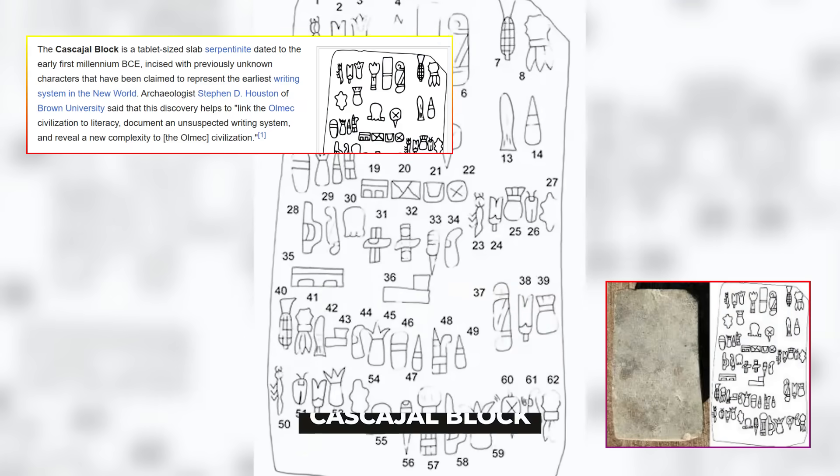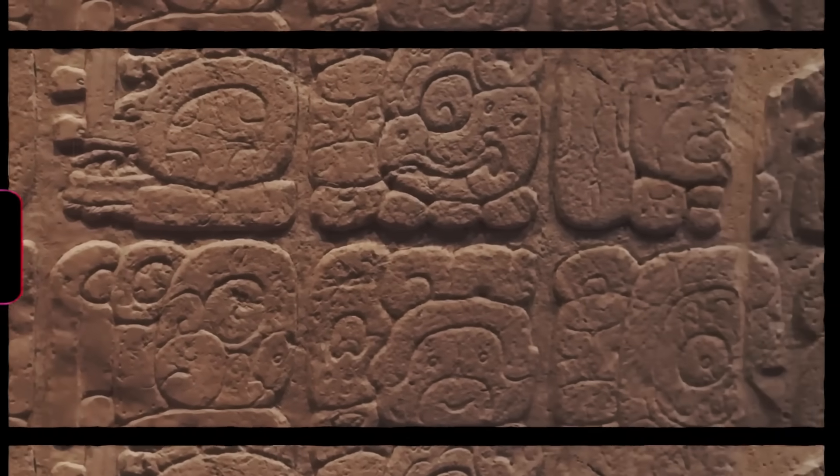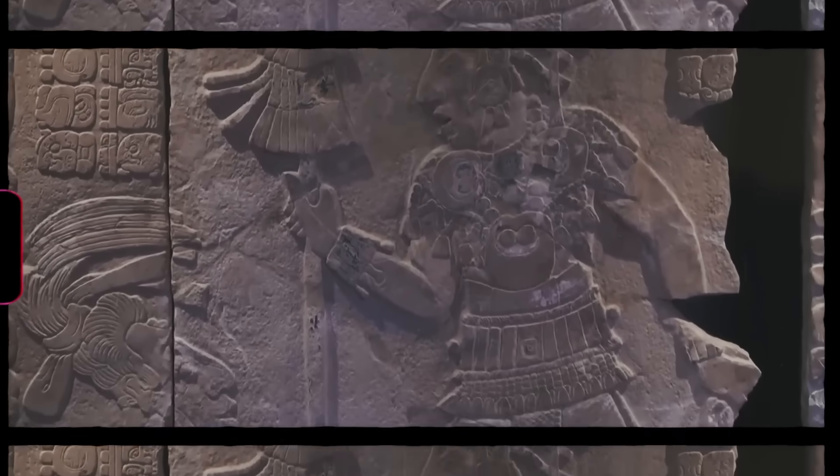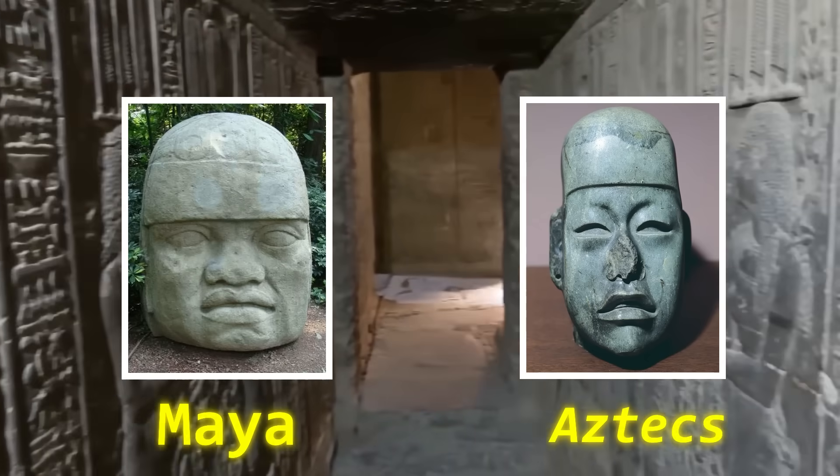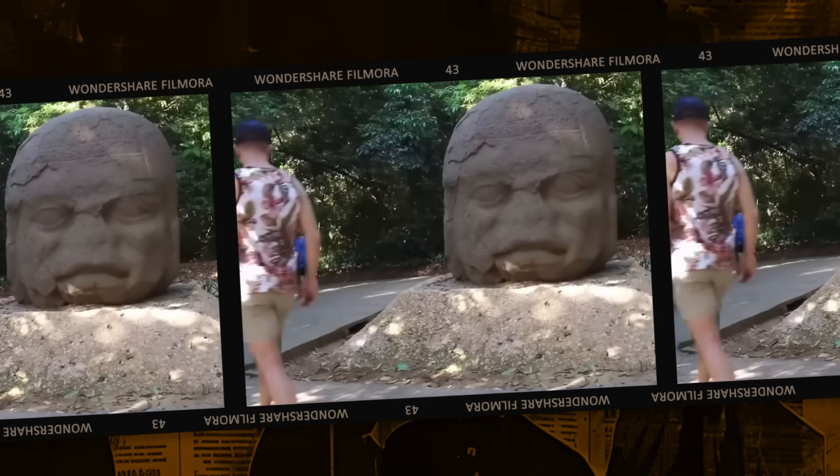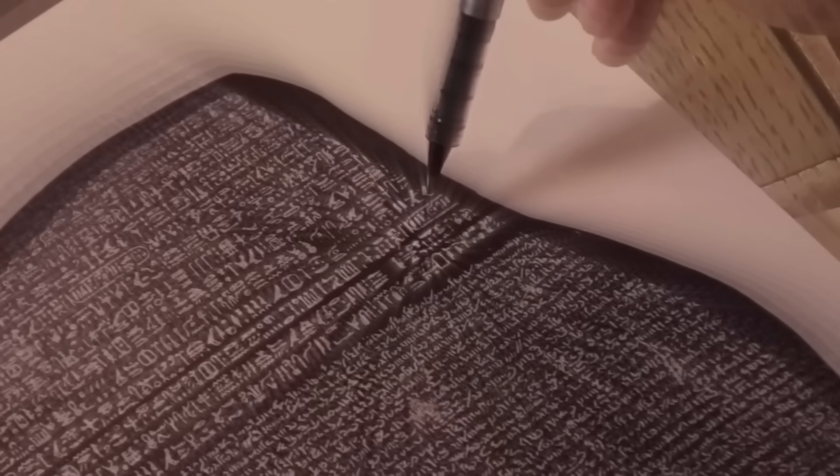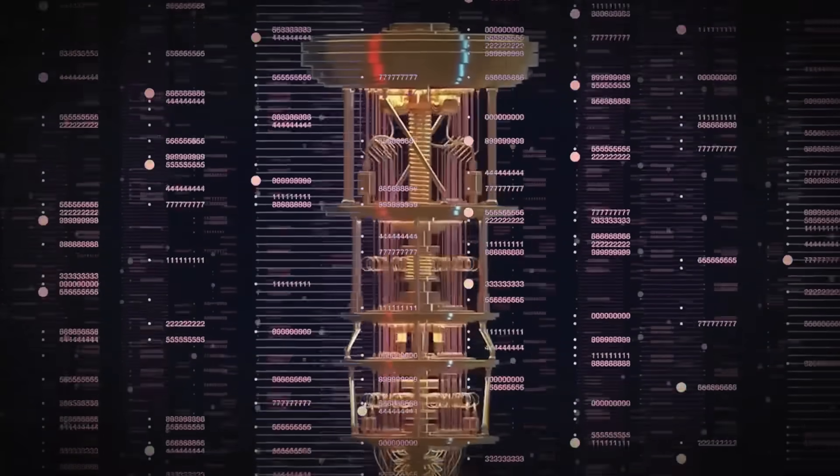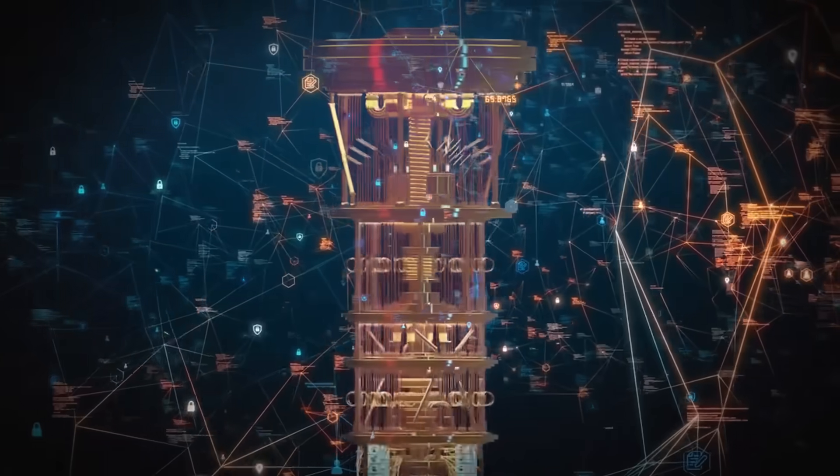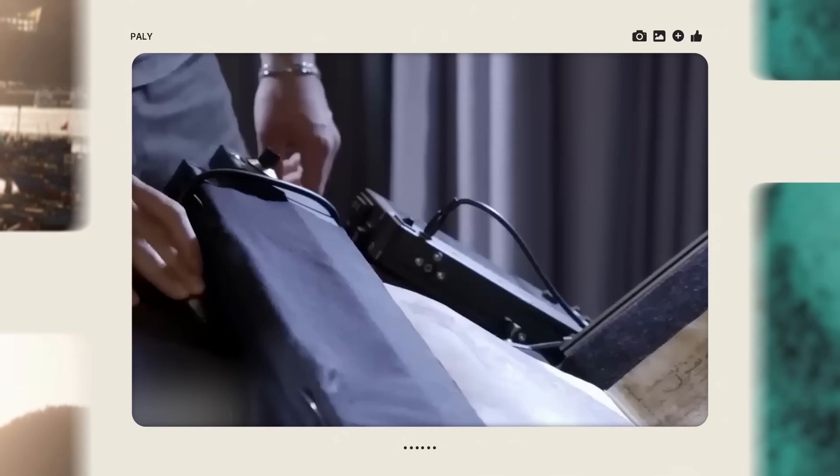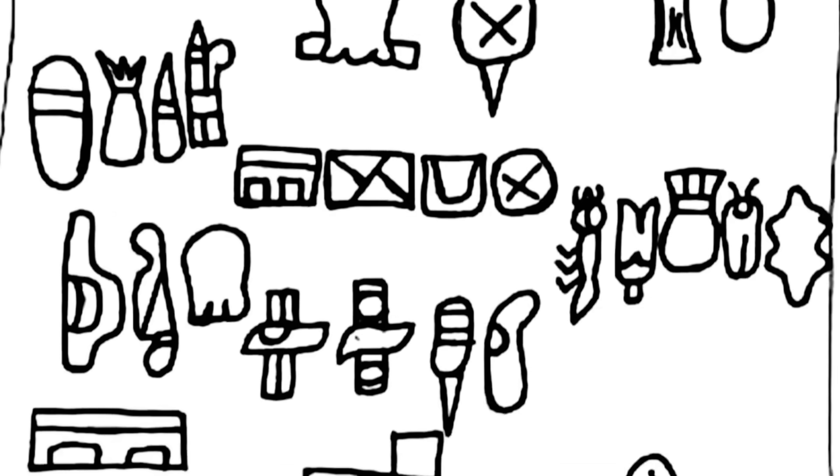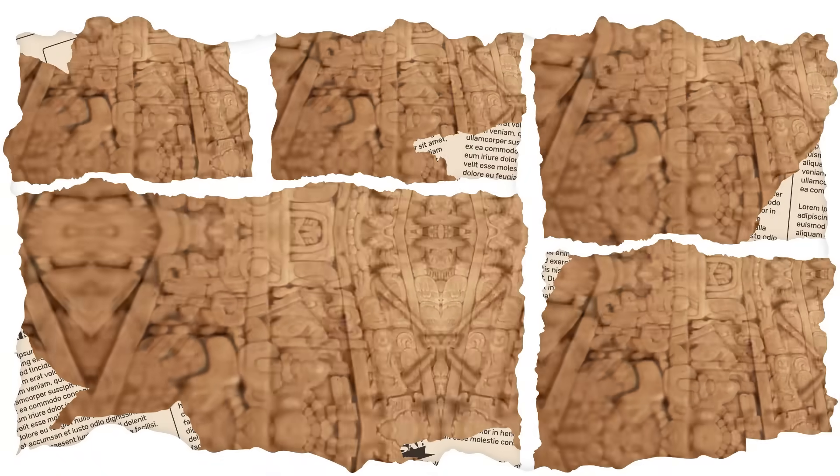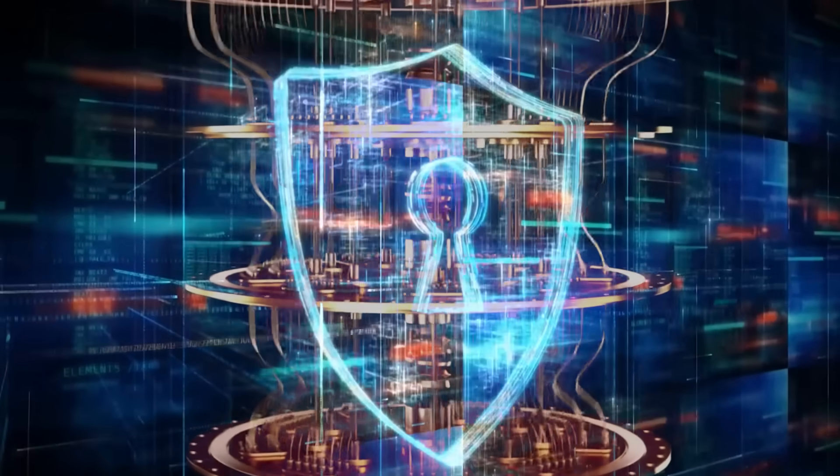This is the Kaskajal block. 62 mysterious symbols carved in stone by America's first civilization. The Olmecs dominated Mexico before the Maya, before the Aztecs. They built colossal heads weighing 15 tons. They created the first writing system in the New World. But nobody could read it until now. Then quantum computing changed everything.